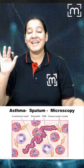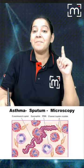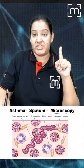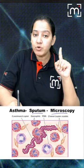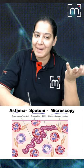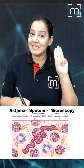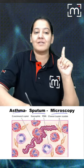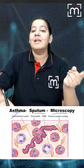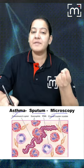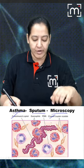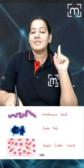Hi friends, here you can see the microscopic picture of sputum of an asthmatic patient. You can recognize the three C's: the coxswain spiral, charcoal-laden crystals, and creola bodies.